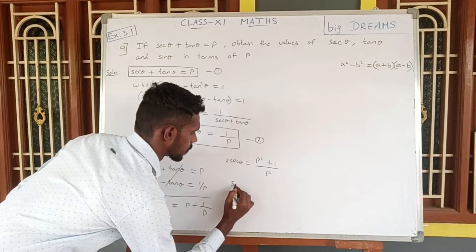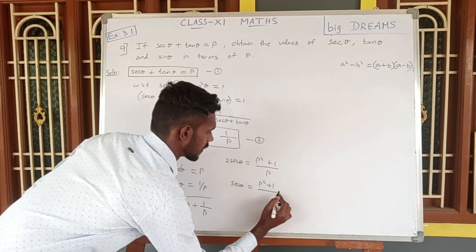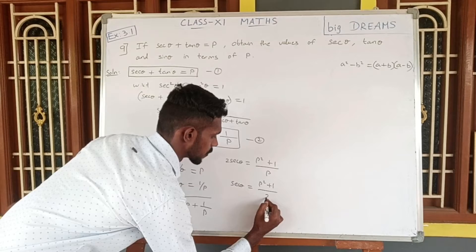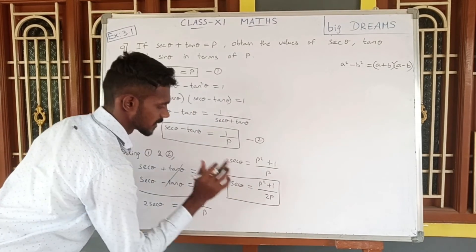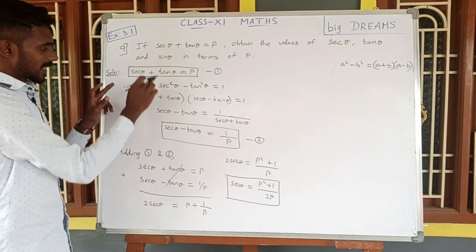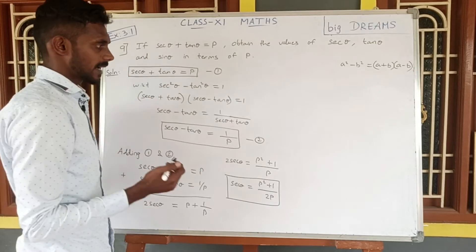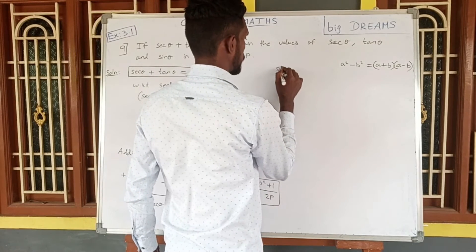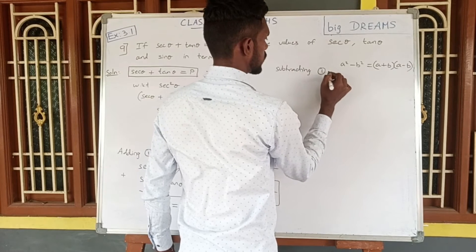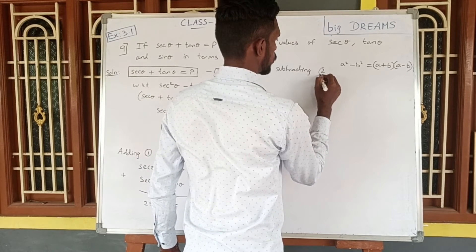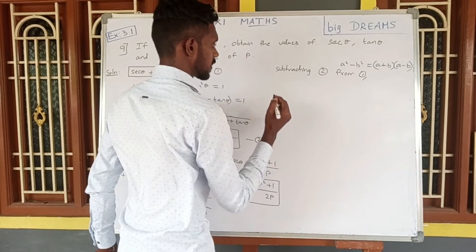Therefore, secant theta is equal to P squared plus 1, divided by 2P.